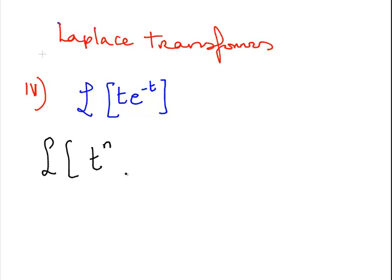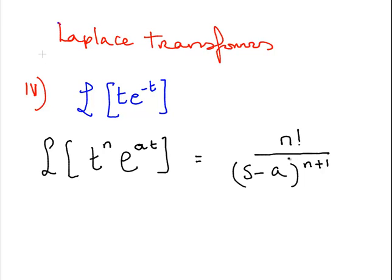t to the power of n by e to the at. That works out to be n factorial over s minus a to the power of n plus 1. This is actually related to something later on called the shifting theorem. But I'll leave that shortly until we get to it.